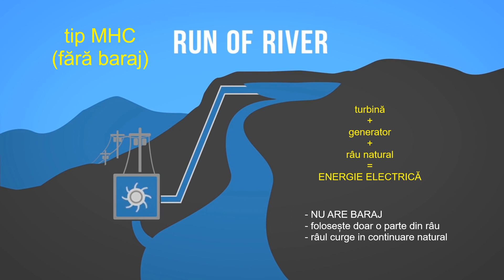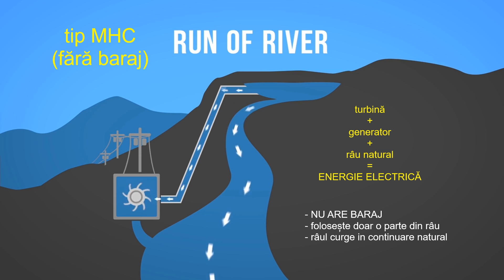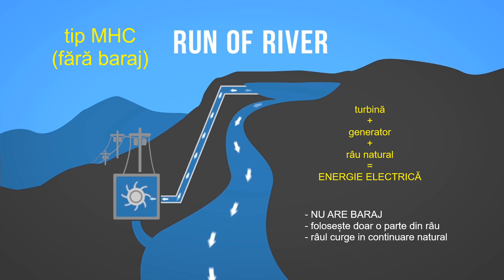The second form of hydroelectricity production is run of river hydro. Run of river still uses turbines and generators, but relies on natural water flow rates of rivers, diverting just a portion of the water through turbines.